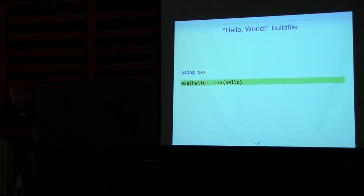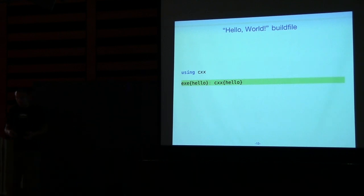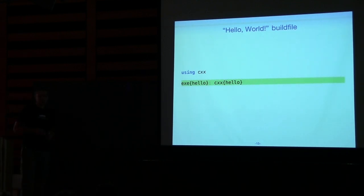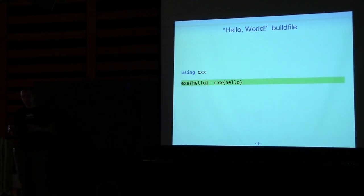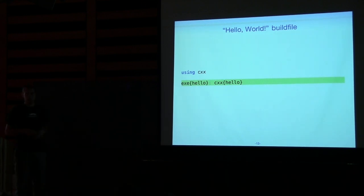In Make, both sides are targets. On the left you have a target and on the right a prerequisite which are also targets — that turned out to be a really bad idea, leading to hacks like VPATH to work around them. In build2, on the left you still have targets, but on the right it's actually a prerequisite — a separate entity which is later resolved to targets in interesting ways.